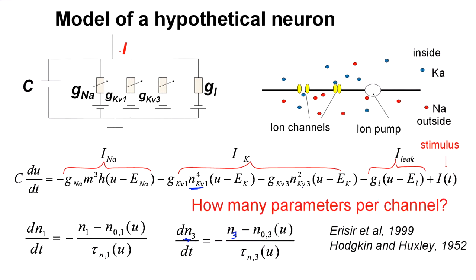So, how many channels do we have per current? How many parameters do we have per channel? Well, each channel is characterized by a time constant. But the time constant is not a constant but voltage-dependent. You need at least two or three parameters for the time constant. Similarly, the stationary value needs at least two or three parameters. Finally, the maximum conductance is another parameter. So, we have easily five, six, seven or more parameters for each of the ion channels.